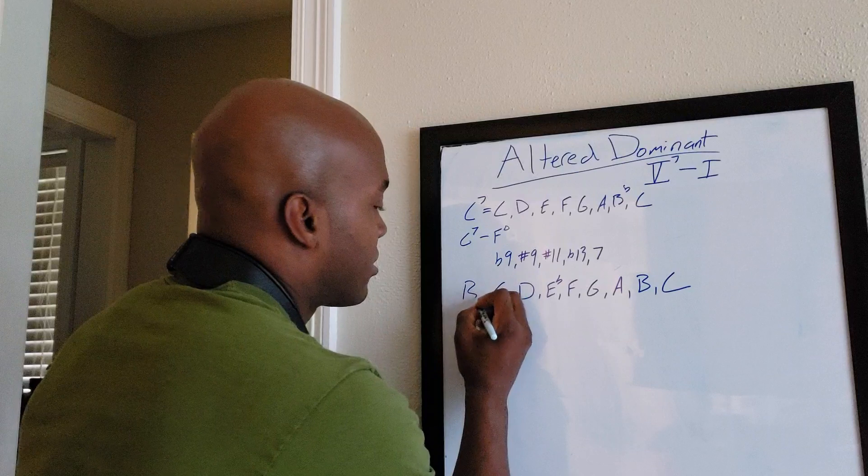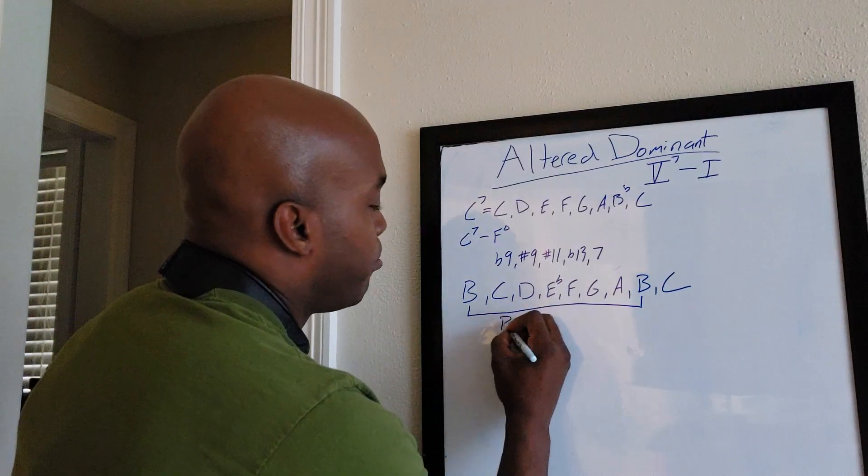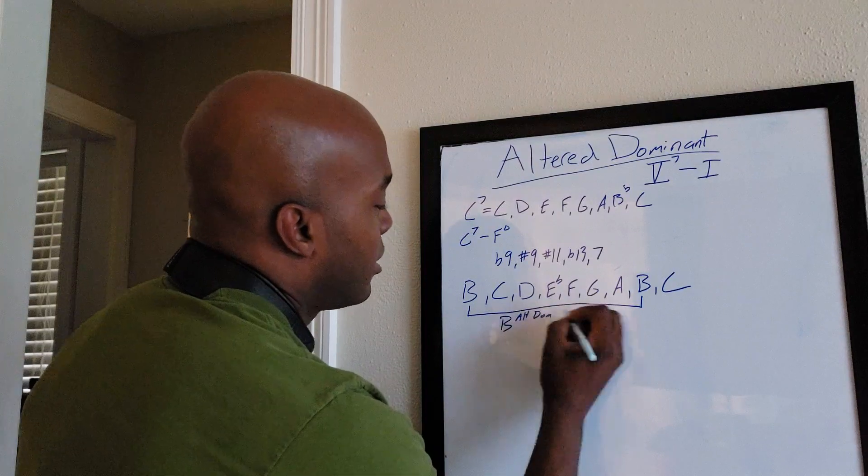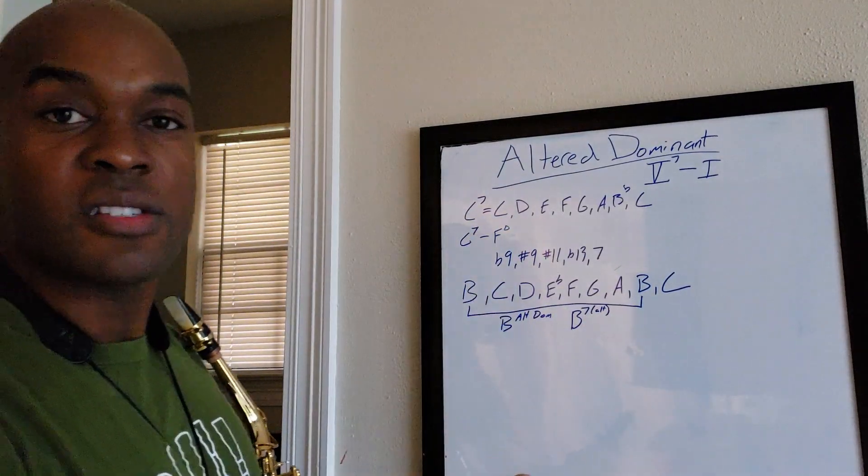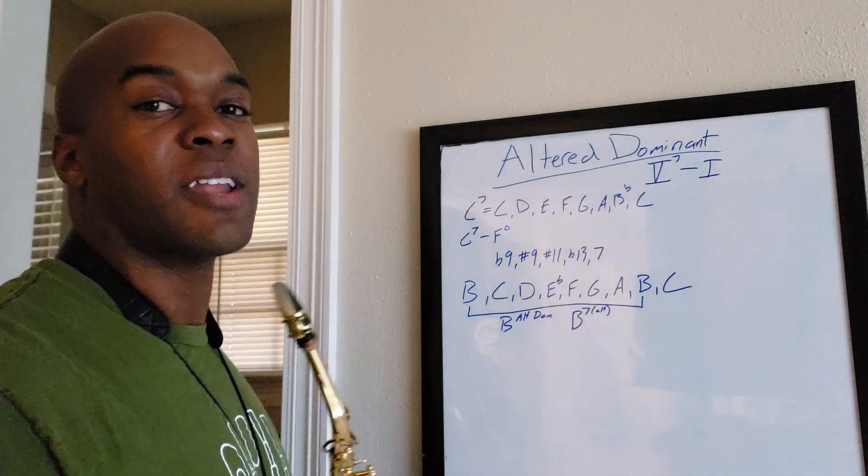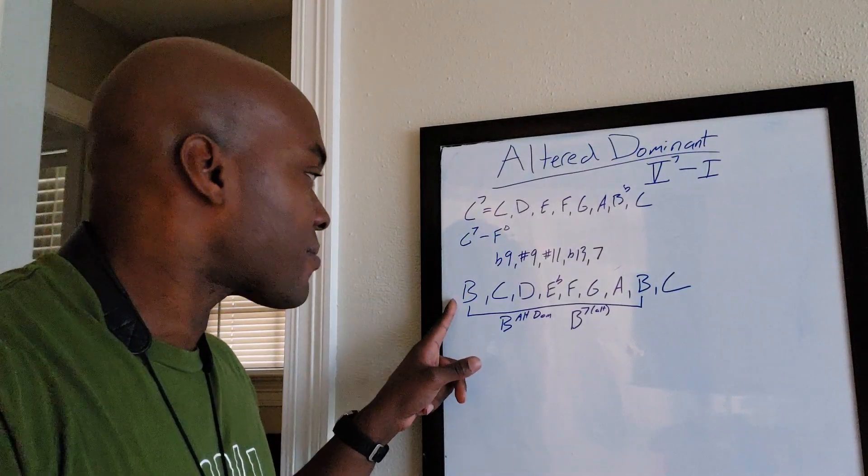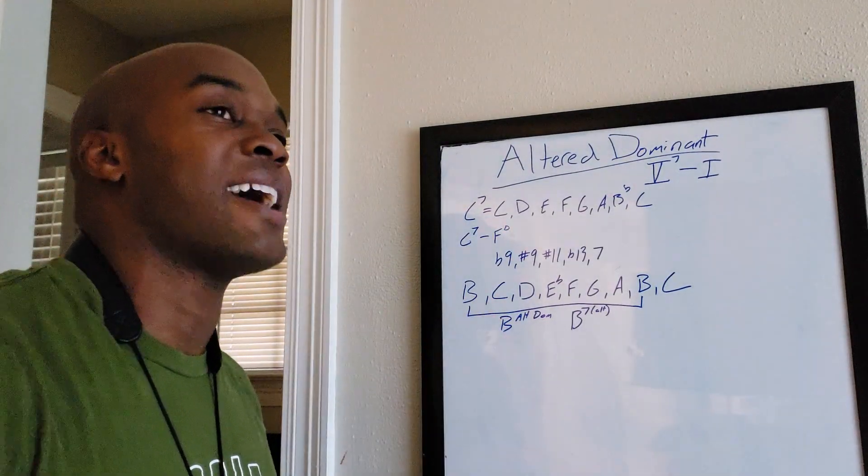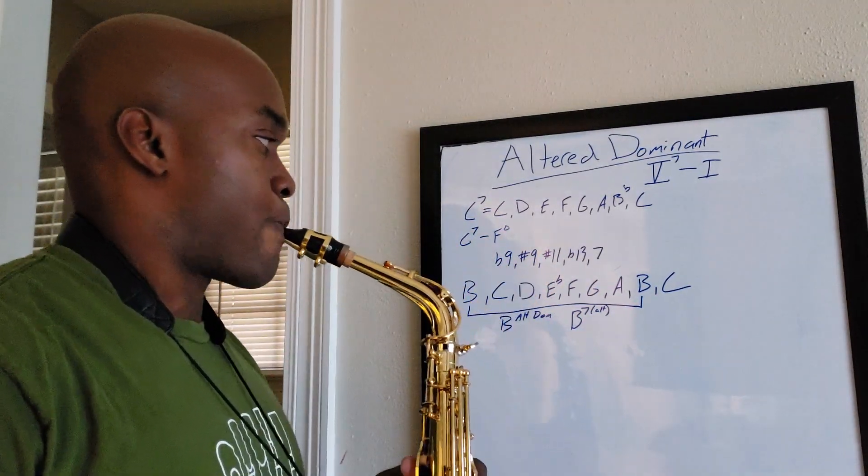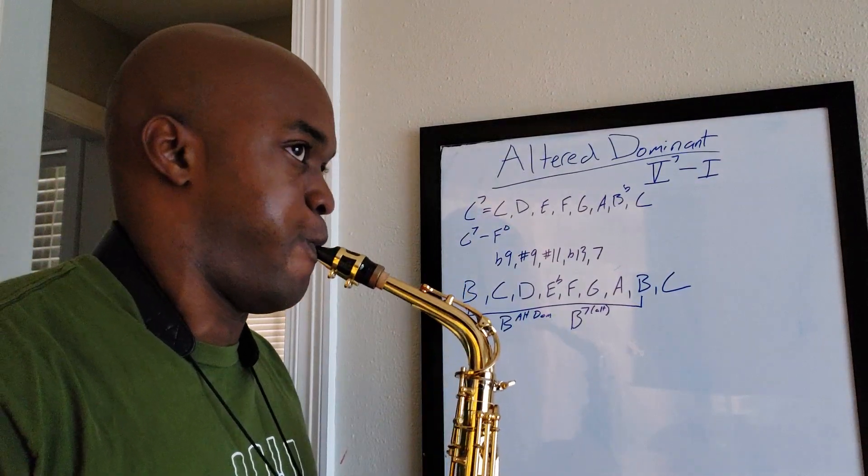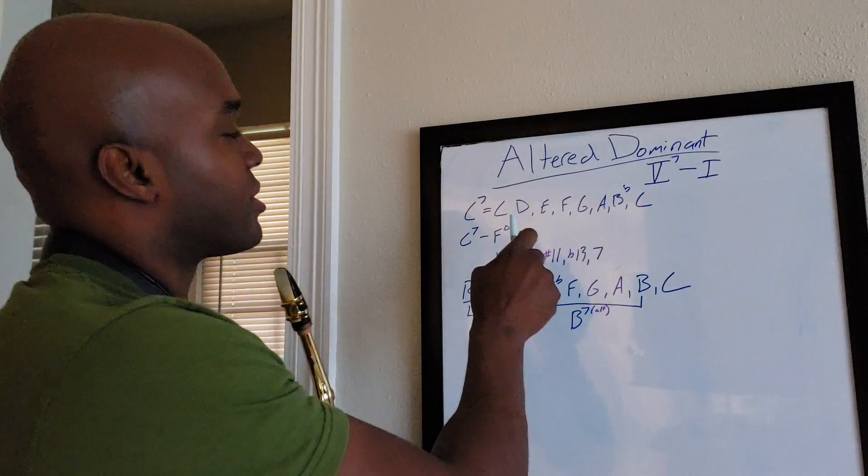And then I play from B to B, and that gives me B altered dominant. So basically anytime that you would see B, I've usually seen it written like B7 alt, or you might see B7 flat 9, B7 sharp 9, etc. Those are just simply alterations. So all I did was basically go from B, go up a half step to whatever note that is, and play that ascending melodic minor scale. It sounds like this in the key of B. And B wants to resolve to E, right?